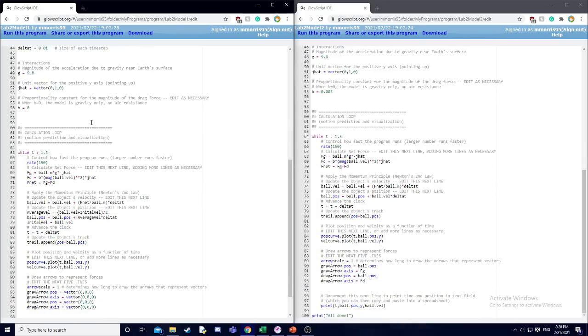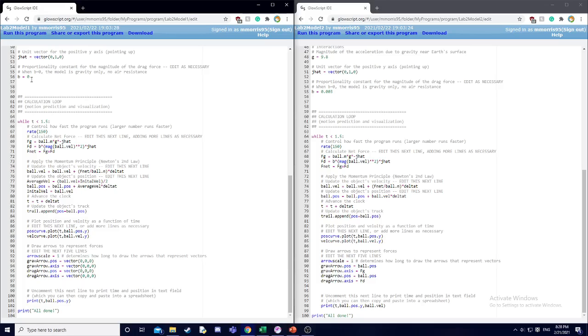The big change starts with first the proportionality constant b, where it's set to zero for model one, because we don't consider drag, and it's set to 0.003 for model two.